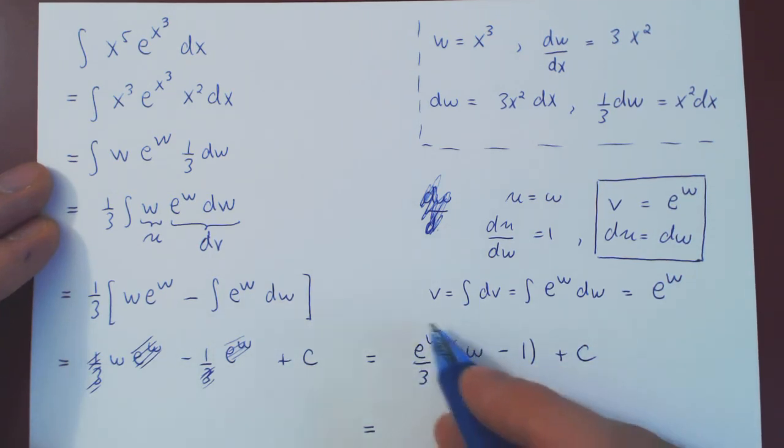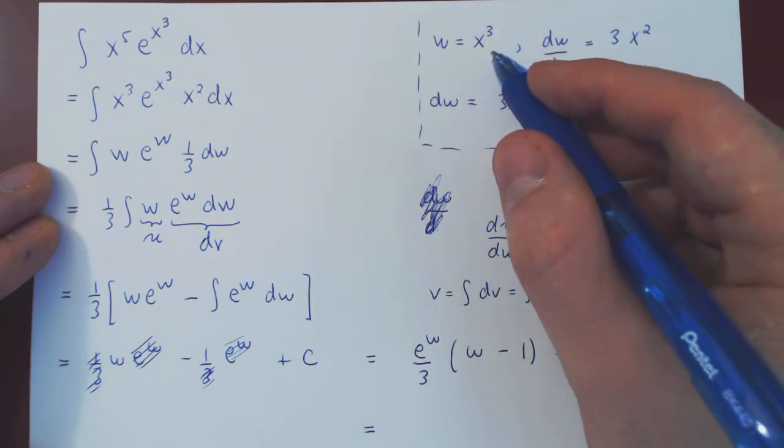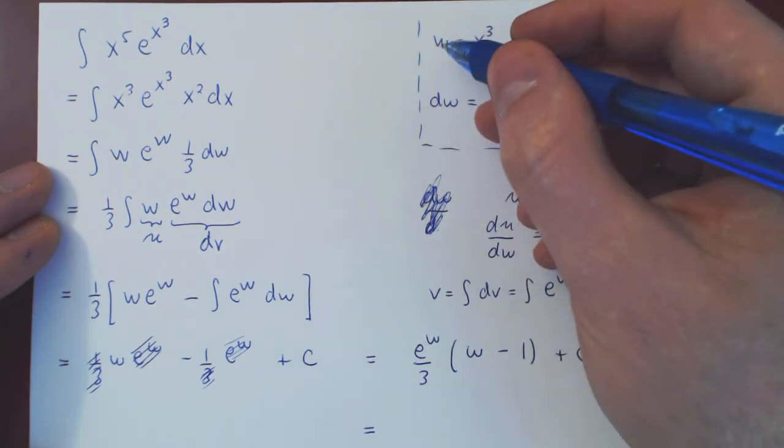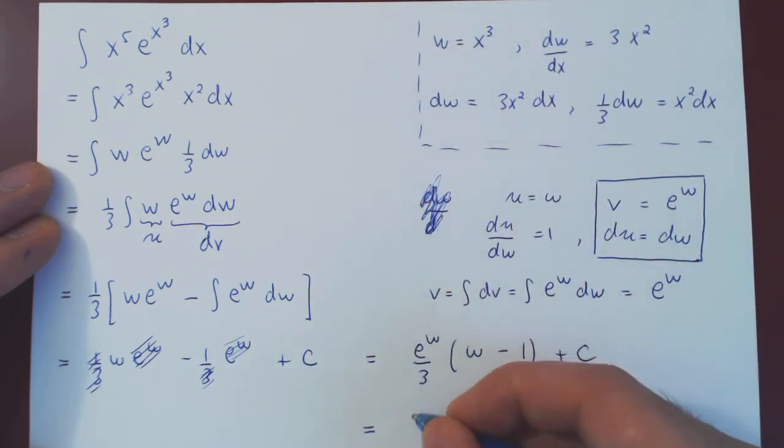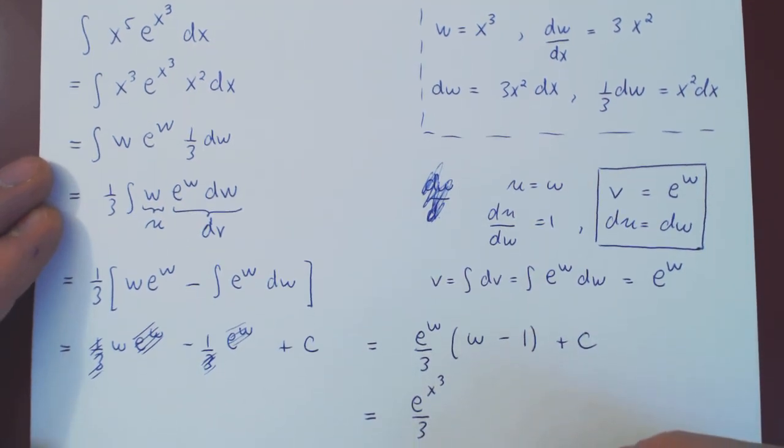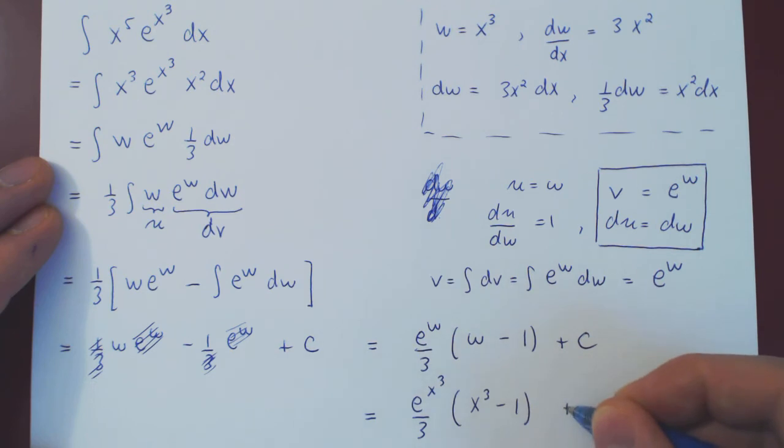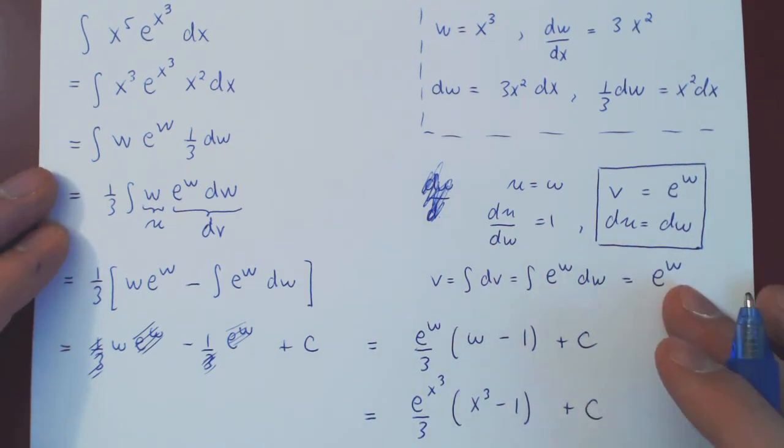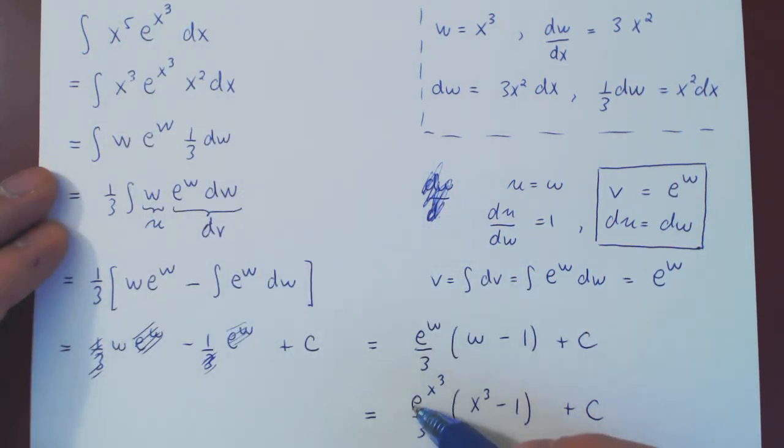Well, so we go back, what was w as a function of x? This was our substitution that was the so-called u-substitution, even though we used w in place of u. But w is simply x cubed. So, we have e to the x cubed over 3, times x cubed minus 1, plus c. So, there you have it. If you integrate x to the 5 e to the x cubed dx, you get e to the x cubed over 3 times x cubed minus 1, plus c.